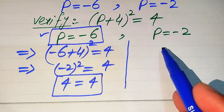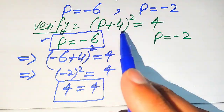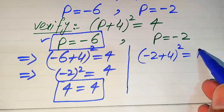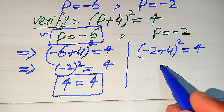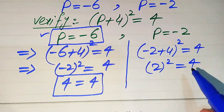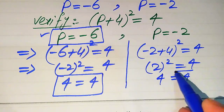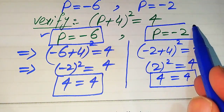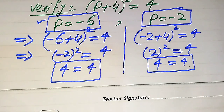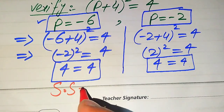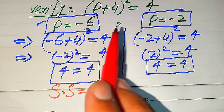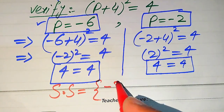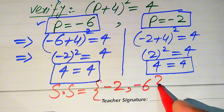Now we verify the second value p = −2: substituting gives (−2 + 4)² = (2)² = 4, which equals 4. This confirms that p = −2 also satisfies the given equation. Since both values satisfy the equation, the solution set is {−2, −6} and these are both valid solutions.